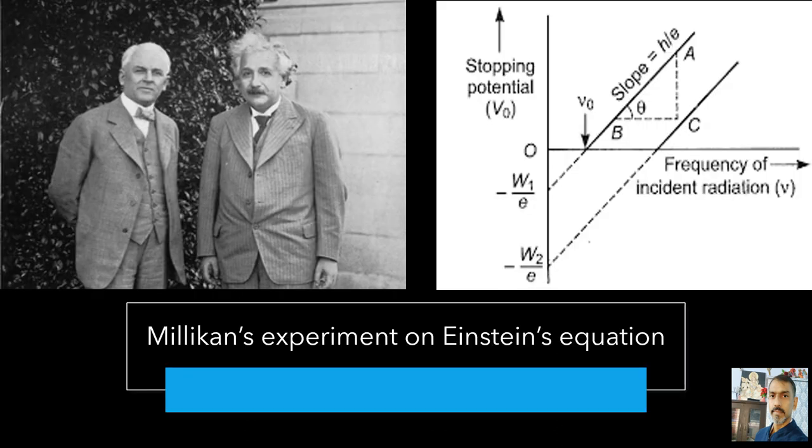Millikan performed a series of experiments on photoelectric effect, aimed at disproving Einstein's photoelectric equation. He measured the slope of the straight line obtained for sodium. Using the known value of e, he determined the value of Planck's constant h. This value was close to the value of Planck's constant 6.626 multiplied by 10 to the power minus 34 joule second, determined in an entirely different context. In this way, in 1916, Millikan proved the validity of Einstein's photoelectric equation, instead of disproving it.